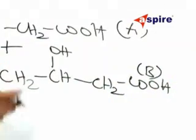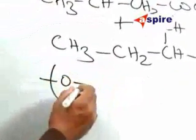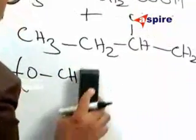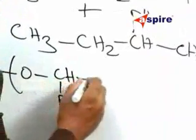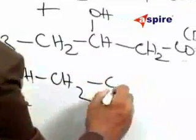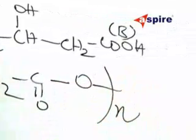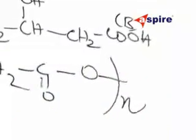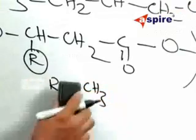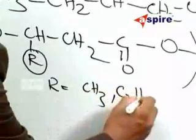You have to combine A and B and write the structure of the polymer which will look like this: OCH2, OCHRCH2, C double bond O, single bond O. This will be the polymer where R can be either CH3 or C2H5.